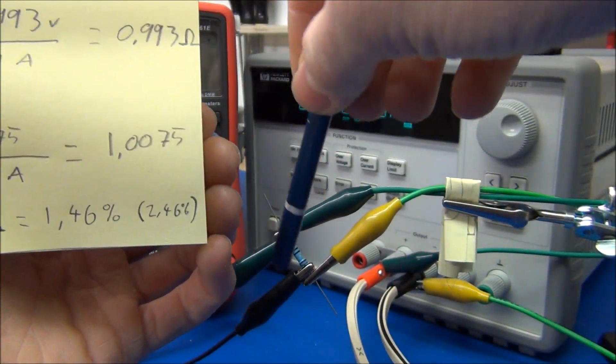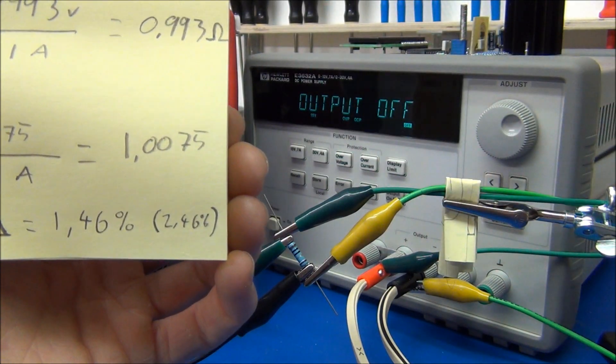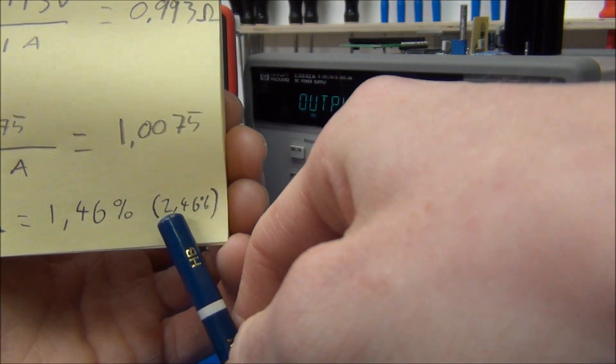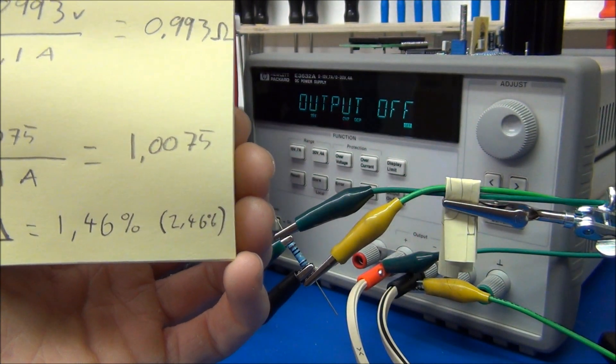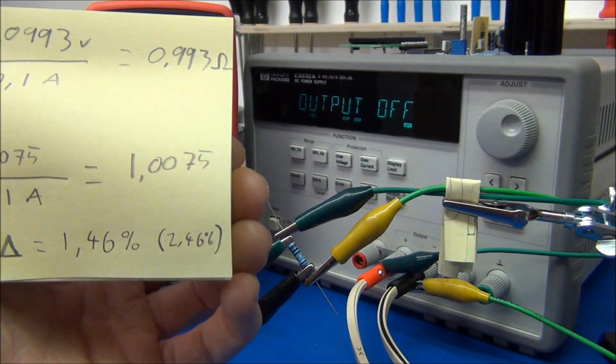If you add the spec of 1% of the resistor, you could get as bad as 2.46%. And that's what fooled me in the first place.